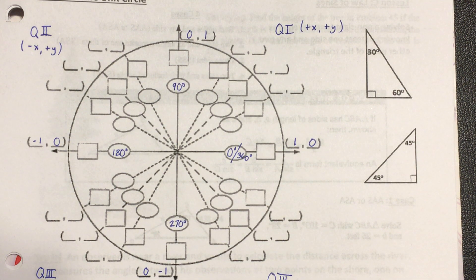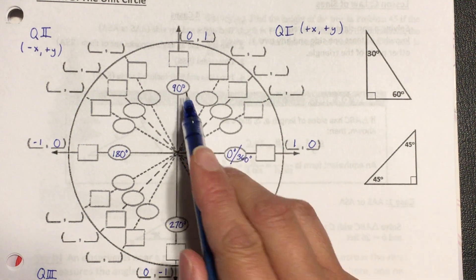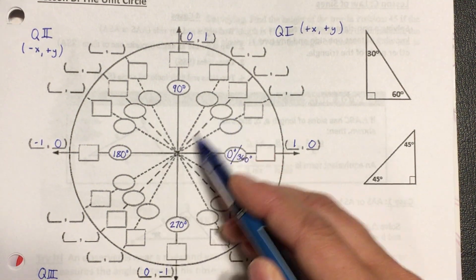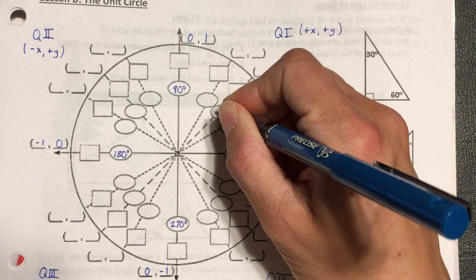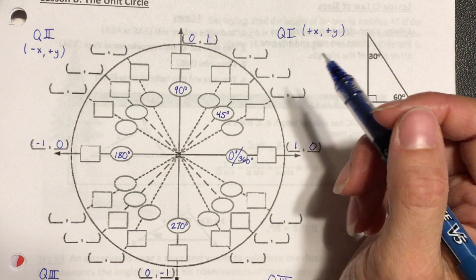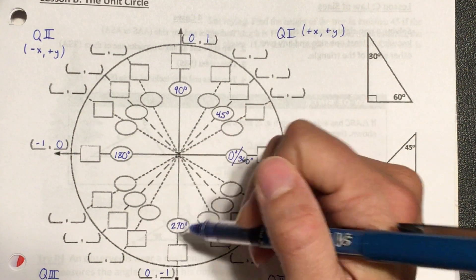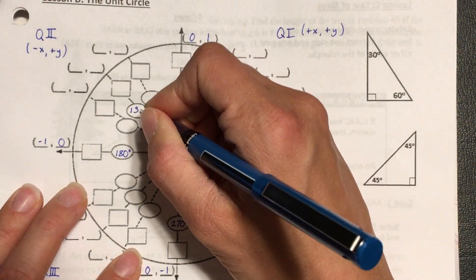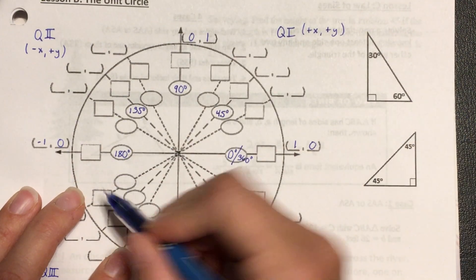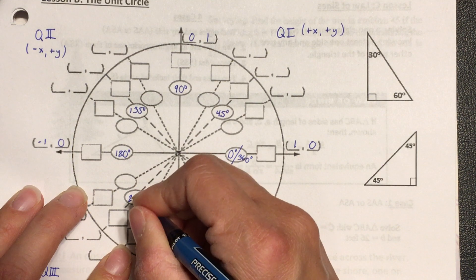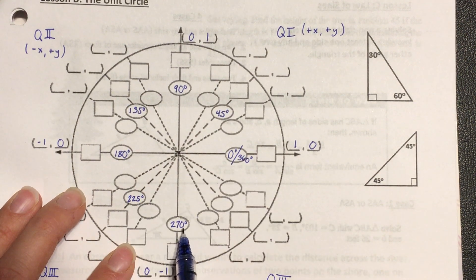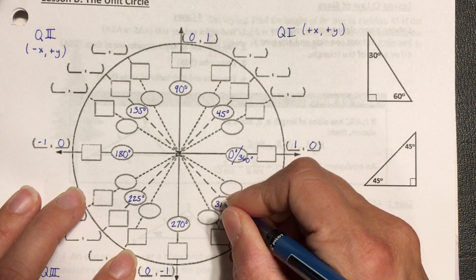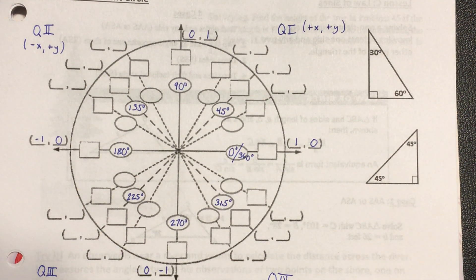Now let's do the rest of our degree measurements. If I take the 90-degree angle and cut it in half, that gives me 45 degrees. All the middle angles are 45 degrees beyond those 90, 180, 270 reference angles: 90 + 45 = 135 degrees, plus 45 gives 180 + 45 = 225 degrees, plus 45 gives 270 + 45 = 315 degrees. Note this is a non-calculator portion of the test.